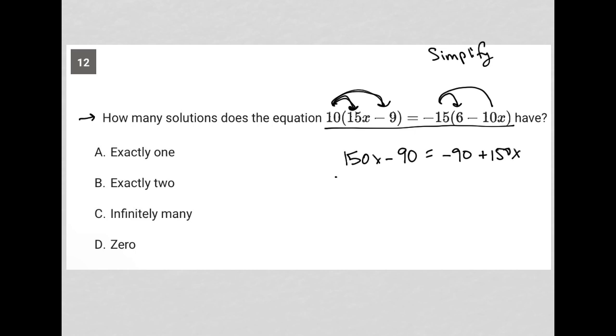So what's going to happen? I'm going to subtract 150x from both sides, and it looks like my x's are completely gone, which automatically means there are no solutions or infinitely many solutions. And then I have negative 90 equals negative 90, which is a true statement. So the fact that there's a true statement left over after getting rid of the variables means that there are infinitely many solutions.